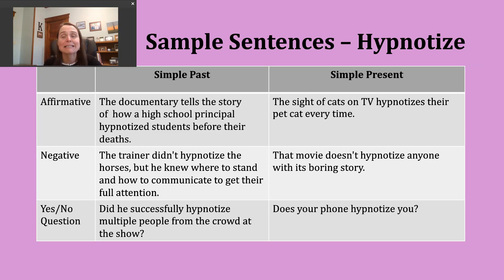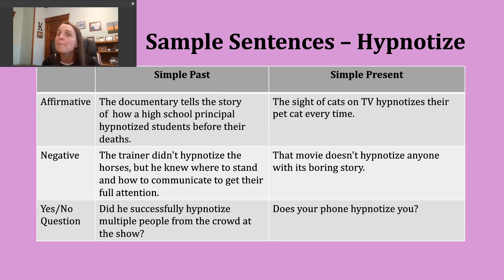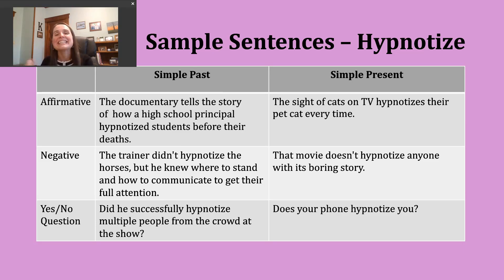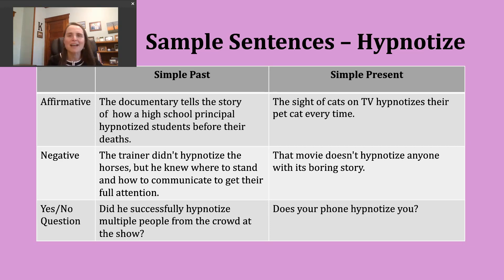To make negative sentences in the simple present, start with your subject. If the subject is I, you, we, or they, use 'do not' and then the base verb. If the subject is he, she, or it, use 'does not' and then the base verb. You'll often hear the contraction forms — 'don't' and 'doesn't.' For example: 'That movie doesn't hypnotize anyone with its boring story' — meaning this movie is not very interesting or capturing people's attention.